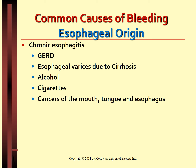Bleeding from the esophagus is most likely due to chronic esophagitis, Mallory-Weiss tear, esophageal varices, and gastroesophageal reflux disease or GERD. Gastritis results in mucosal injury and inflammation. Mallory-Weiss or gastroesophageal mucosal tear refers to tears of the mucosa at the junction of the stomach and esophagus, usually caused by severe alcoholism, coughing, retching, and vomiting.